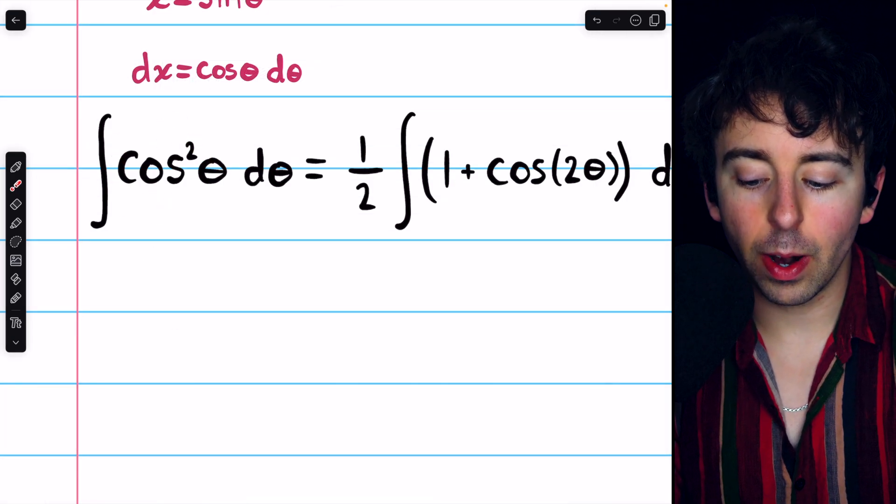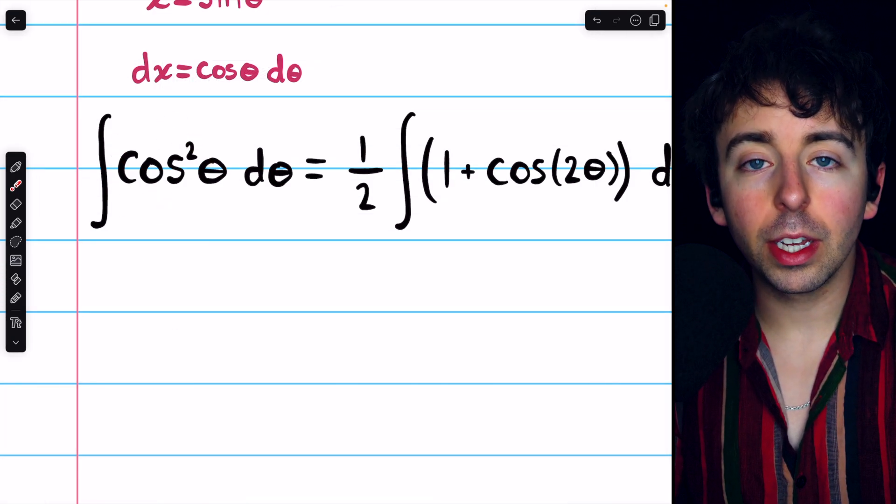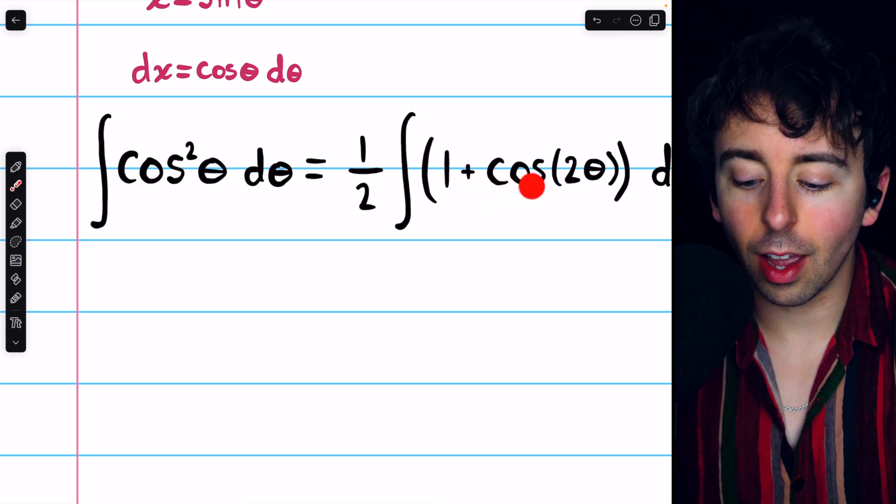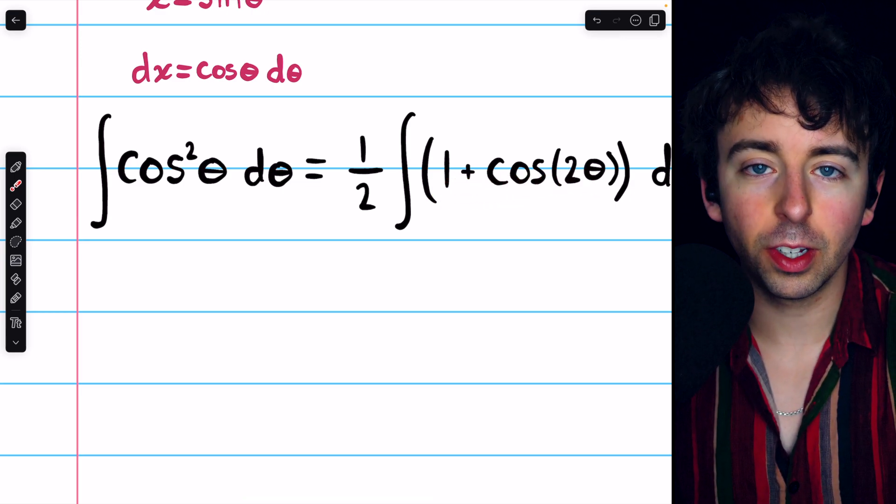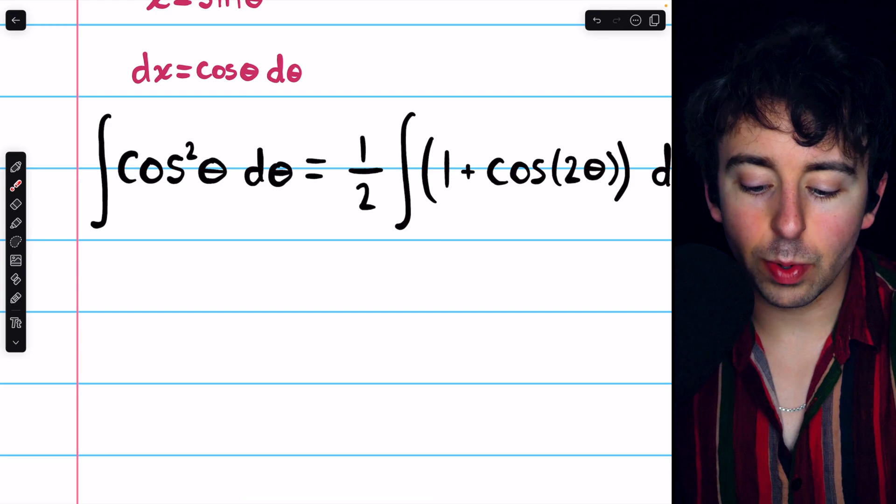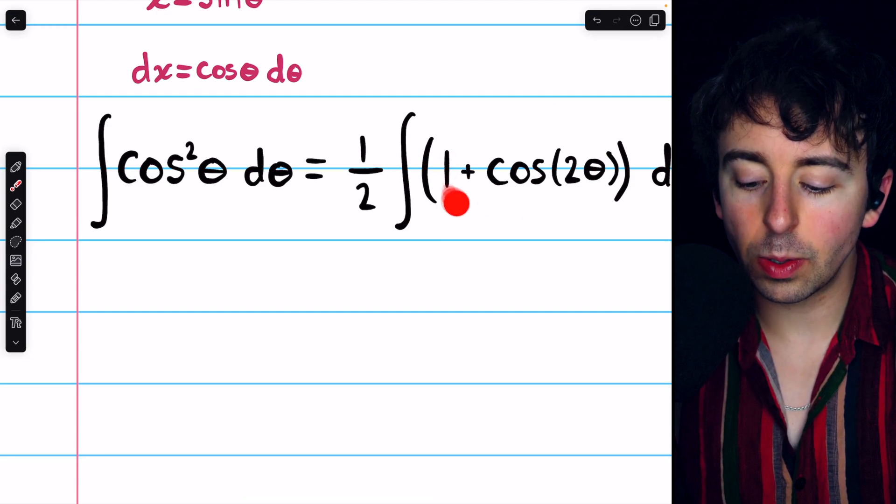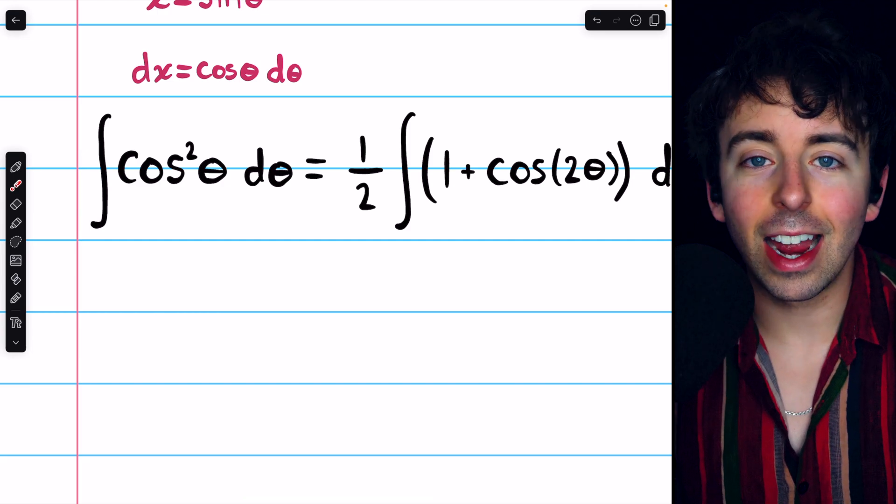Then, to integrate cosine squared theta, we have to recall that cosine squared theta equals 1 plus cosine 2 theta over 2. That division by 2 we can take out of the integral, but that still leaves 1 plus cosine 2 theta inside the integral.